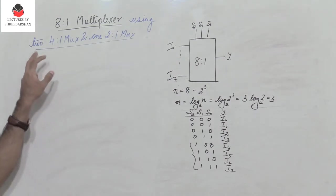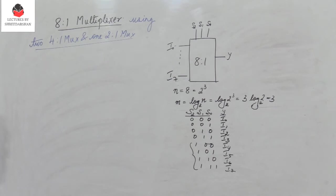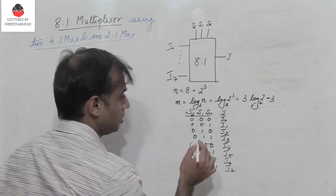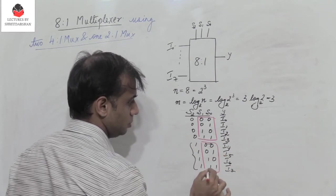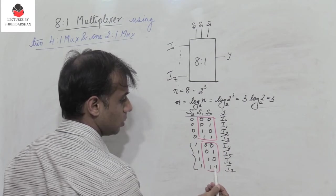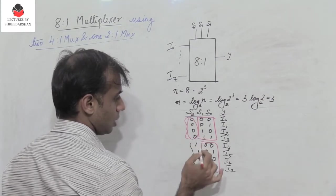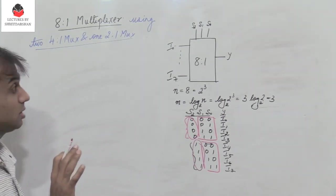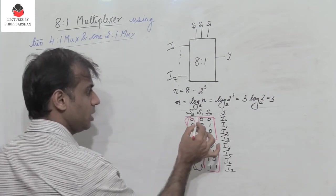Now, is it possible to design an 8-to-1 MUX using two 4-to-1 MUXes and one 2-to-1 MUX? It is possible. If you look at this table, we observe that the columns for S0 and S1 are the same — the pattern 0 0, 0 1, 1 0, 1 1 repeats. For the first four combinations S2 is 0, and for the next four combinations S2 is 1.